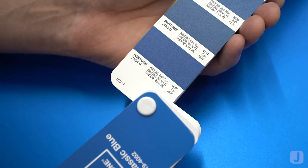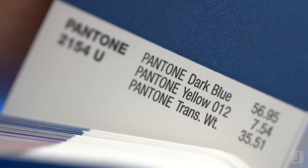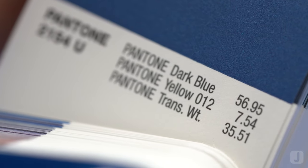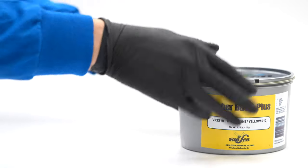The Pantone formula guide tells us that we'll need a ratio of three base inks: 56.95 parts dark blue, 7.54 parts yellow 012, and 35.51 parts transparent white.